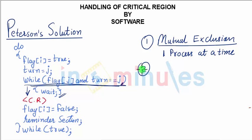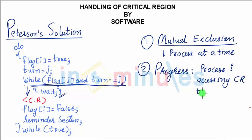The second point is called progress. The system progresses because when process i is accessing the data, it has already made provision for the next one by making turn equal to j.